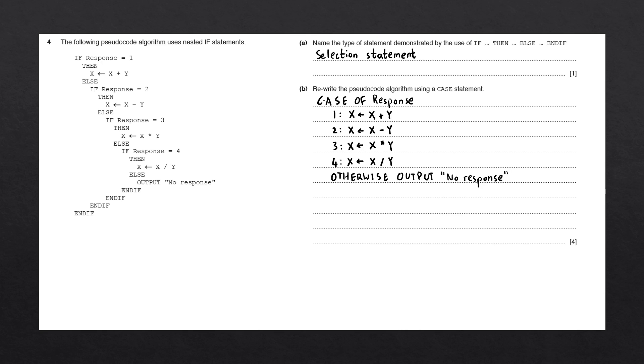The last thing to do is to close the case statement. We do this using the keyword end case. One thing to make sure of is that you have enough space before each line within your case statement. This is called the indentation, and the reason we use it is to make the code easier to interpret. And there we go, that is this question complete.